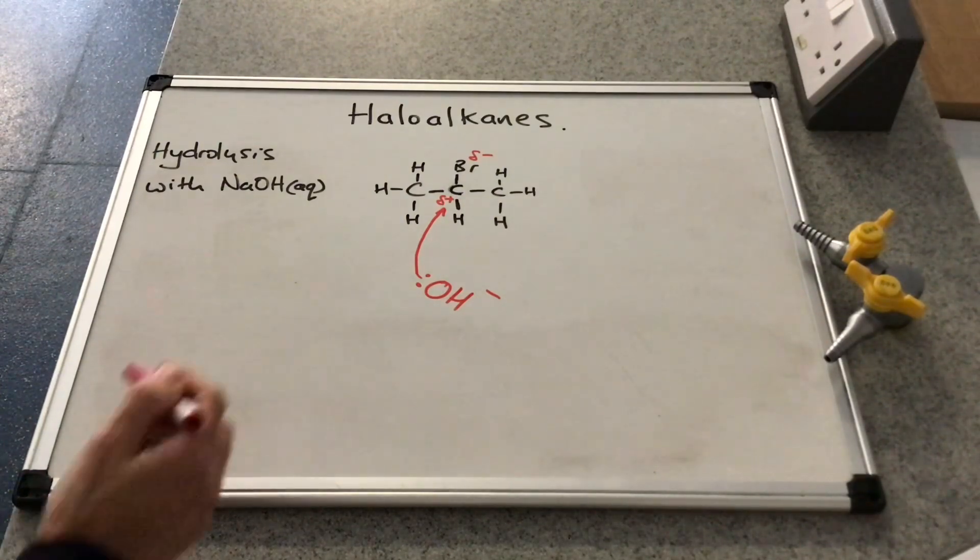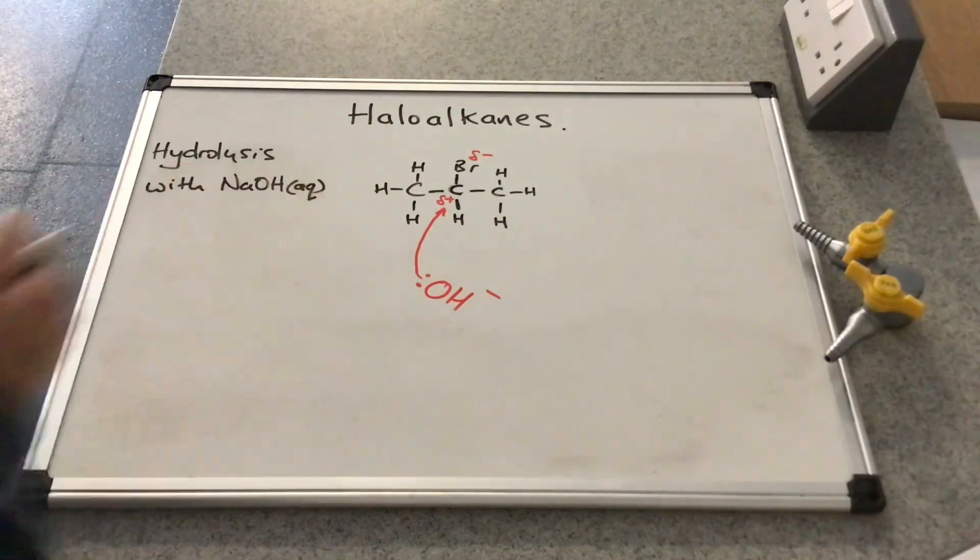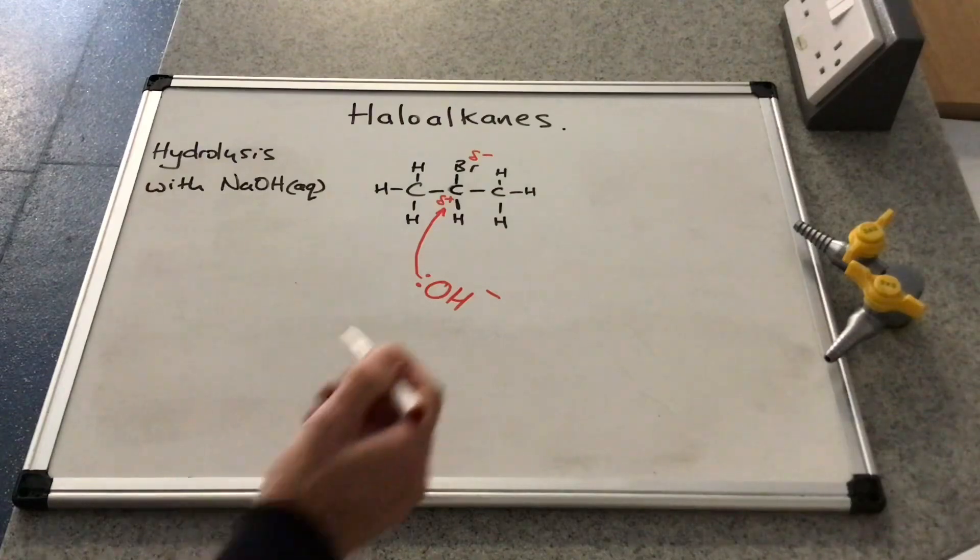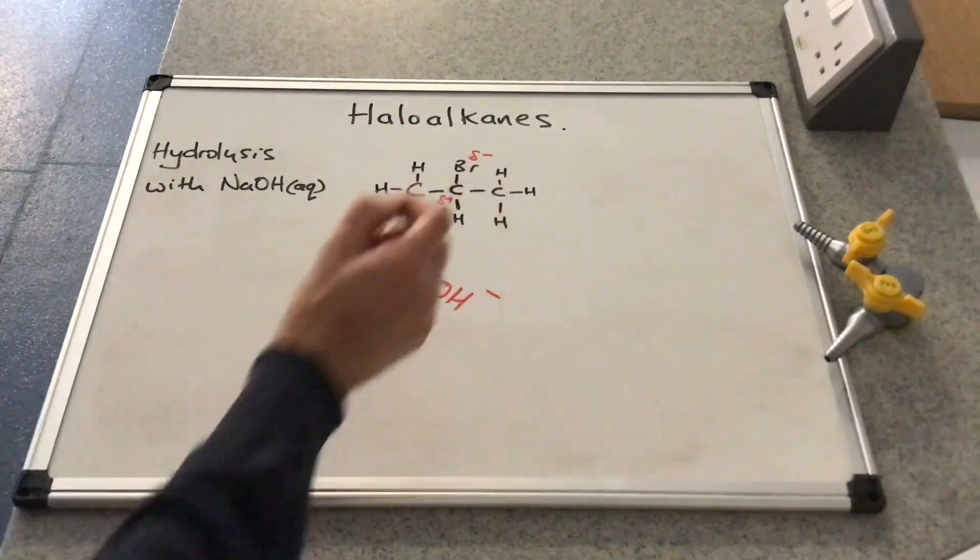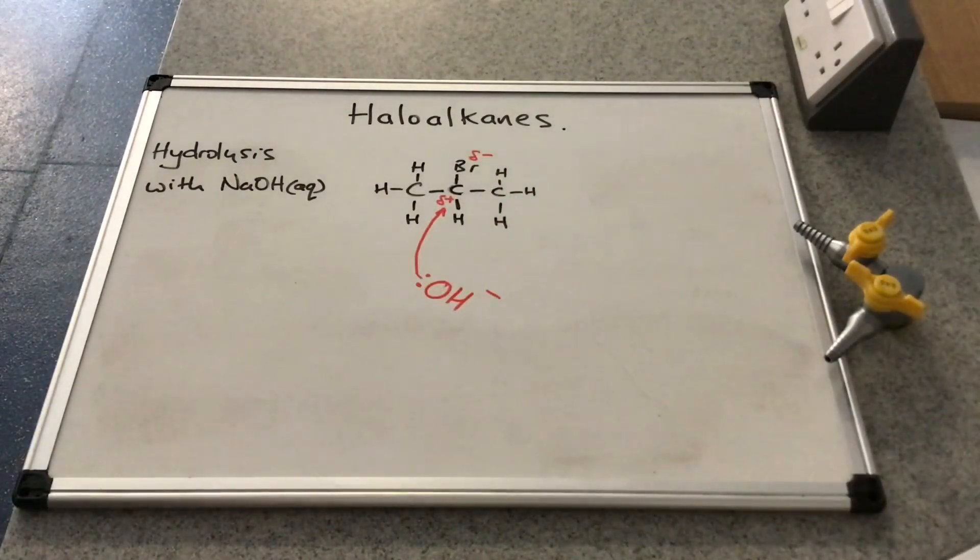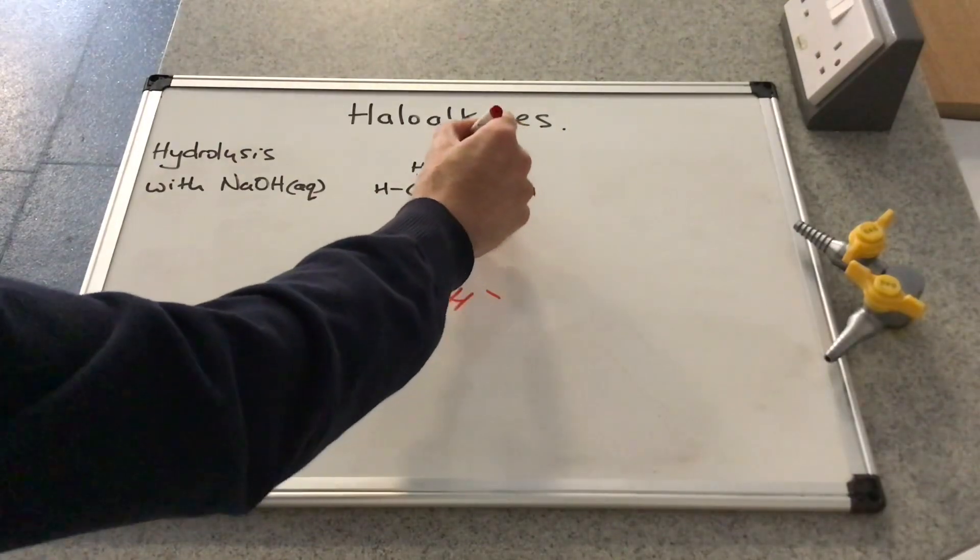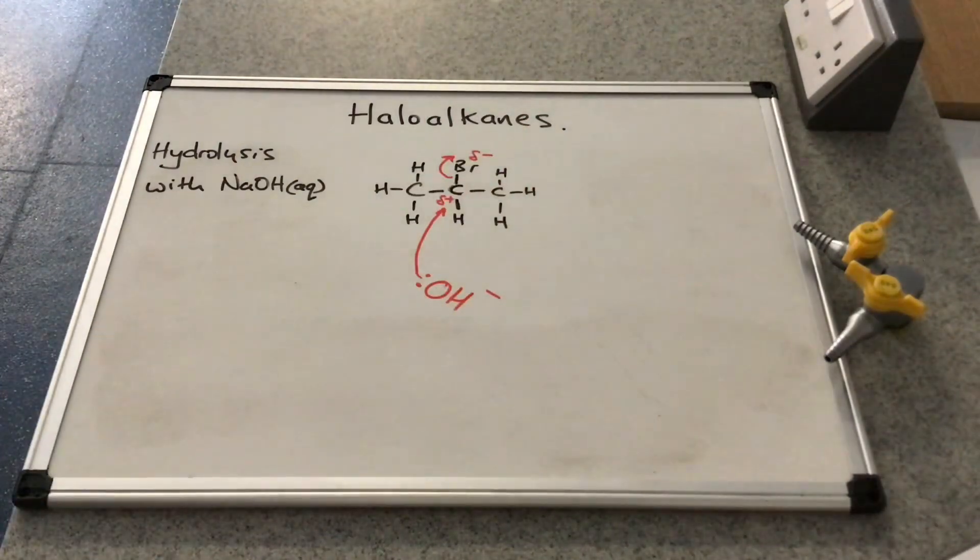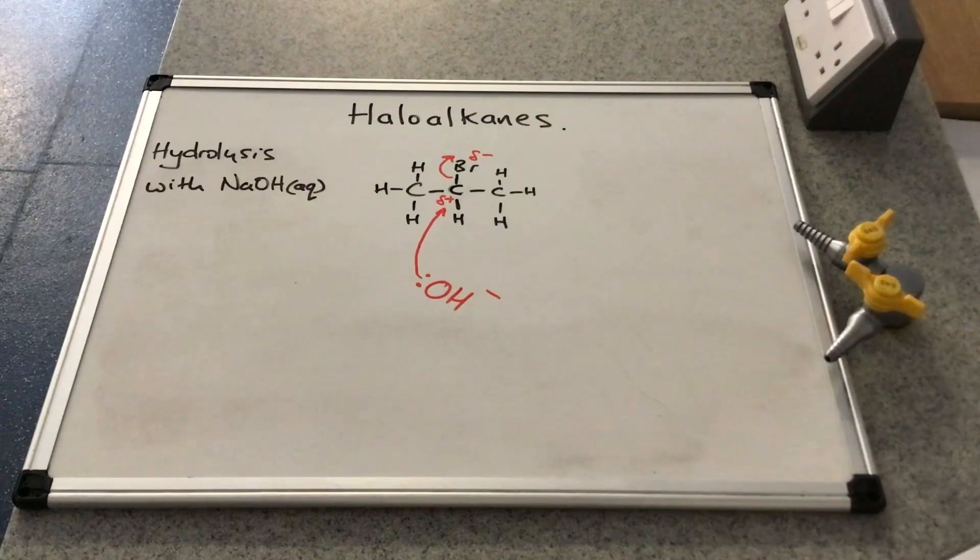So typically, if you were carrying out this reaction, you would reflux the sodium hydroxide aqueous with the haloalkane. And what would happen is the hydroxide ion would interact with the slightly positive carbon, and it would repel the pair of electrons that are already tended towards the bromine completely onto the bromine. And it would break that covalent bond by heterolytic fission.